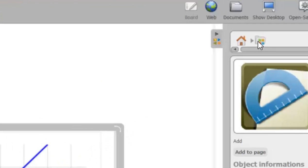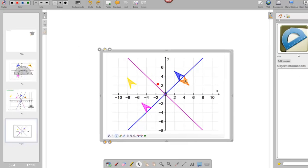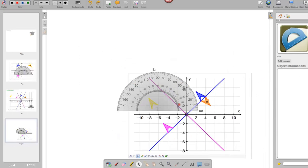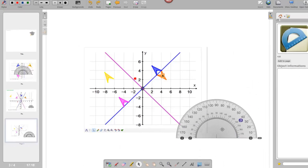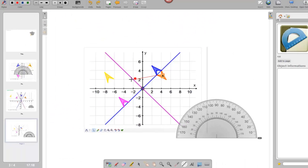If I click at the top right here, I can see all the different applications that are available within OpenSancore. I'm going to add a protractor in this case, and that's quite useful if I wanted to measure maybe the angle of rotation between my original object and my image.